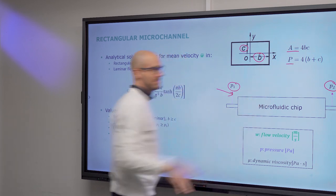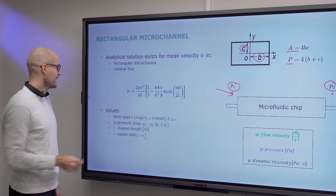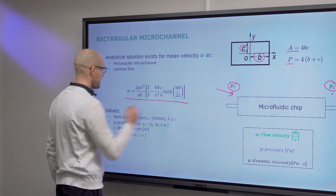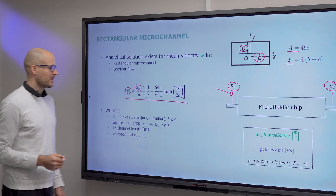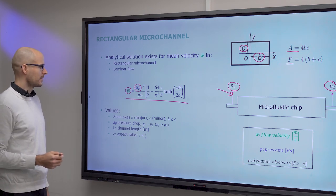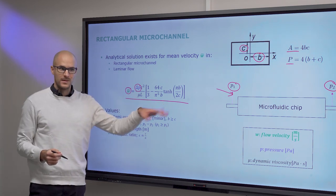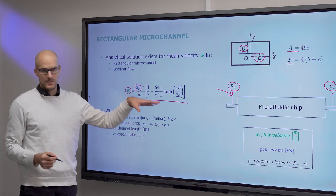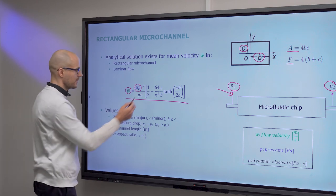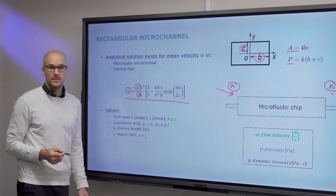Area and perimeter for rectangles. Expression is like this. So again, mean velocity expressed by knowing the pressure drop. The rest of the parameters in the previous case, in this case also, you can get from the geometry. And also you need to know the liquid viscosity.